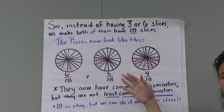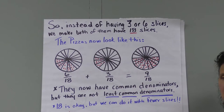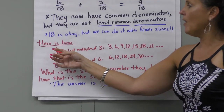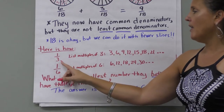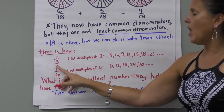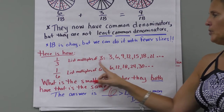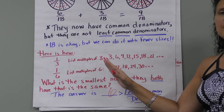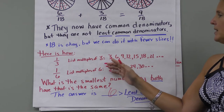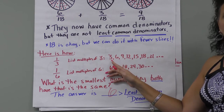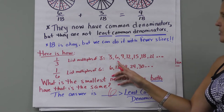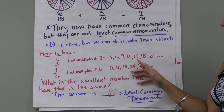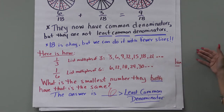Can we do this same problem with fewer slices? Yes, we can. We take our one-third and list the multiples of that denominator — multiples are just like your multiplication tables. So: three, six, nine, twelve, fifteen, eighteen, twenty-one, and so on.